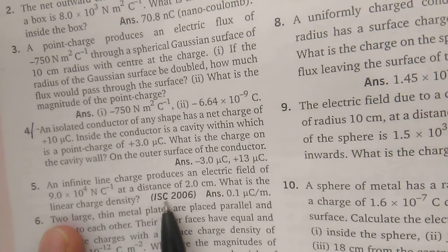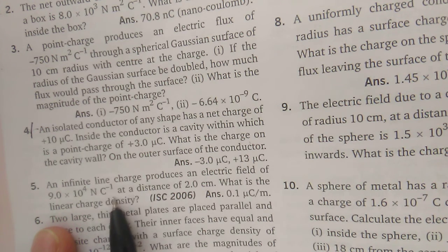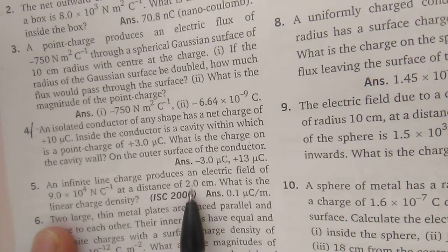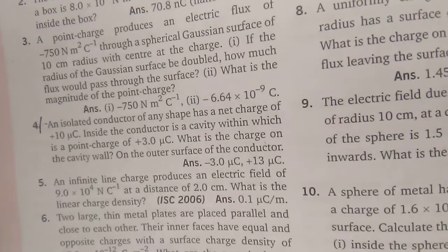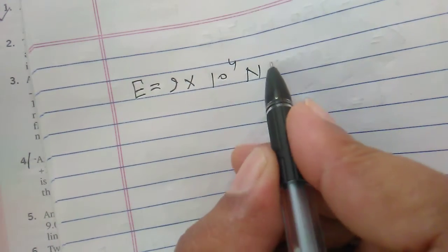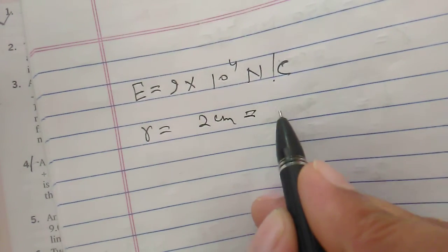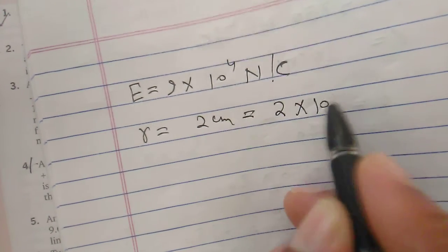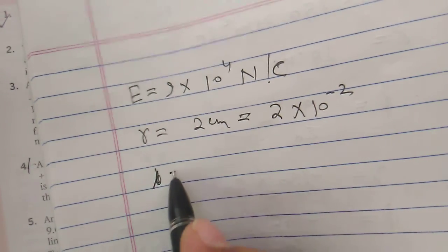Question number five is important — it is from 2006. An infinite line charge produces an electric field of 9 × 10⁴ N/C at a distance of 2 centimeter. What is the linear charge density? The electric field E = 9 × 10⁴ N/C, and r = 2 cm = 2 × 10⁻² m. We need to find the value of linear charge density (λ or ρ).